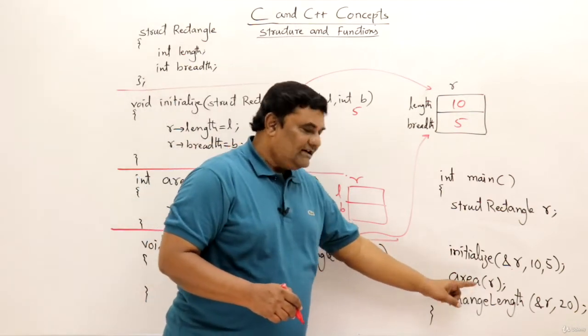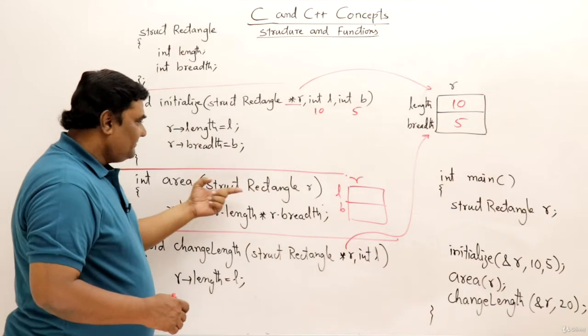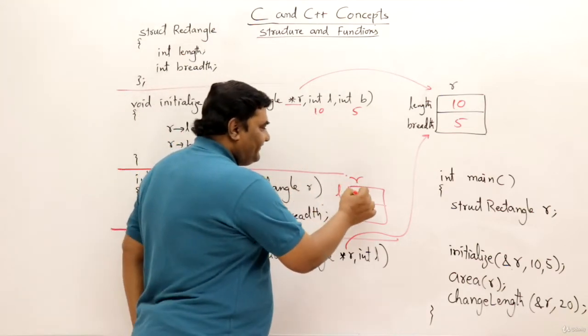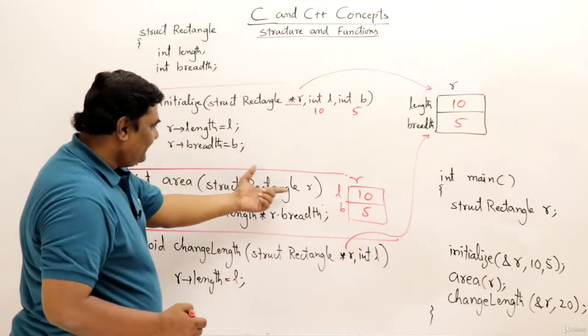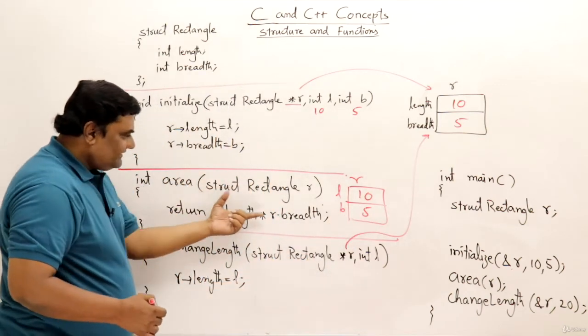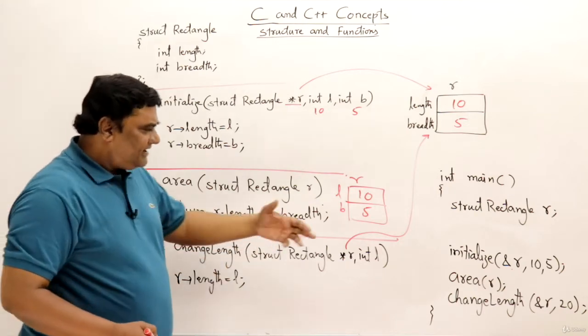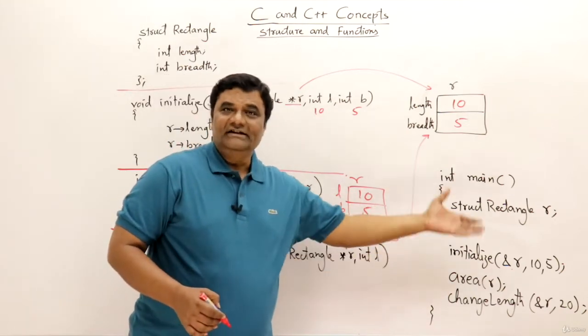Then back to the main function, call area function. This is called by value. A new object is created for r, then 10 and 5 are copied and it is taking call by value. Then it is calculating length into breadth area and returning. So it returns integer type but I am not using that value, just I call area function.